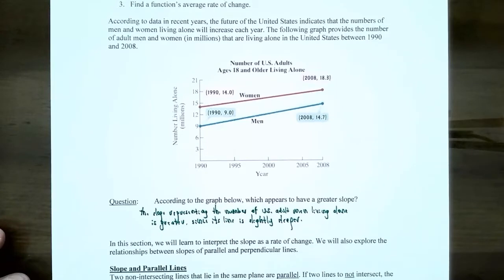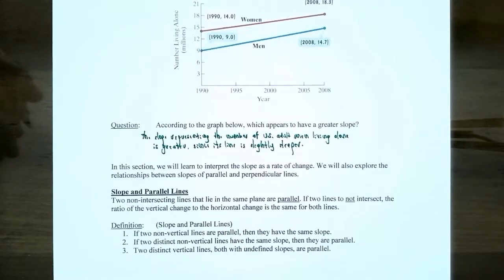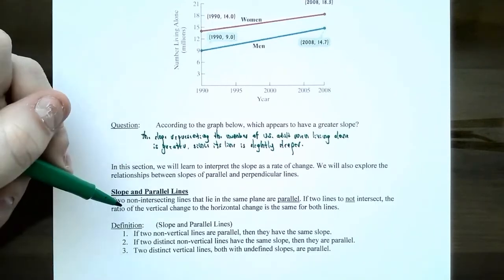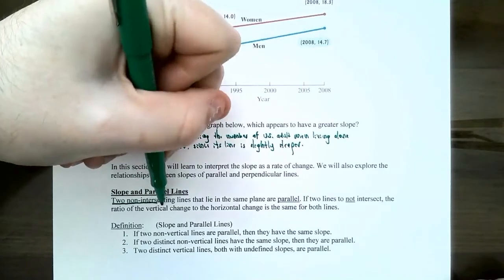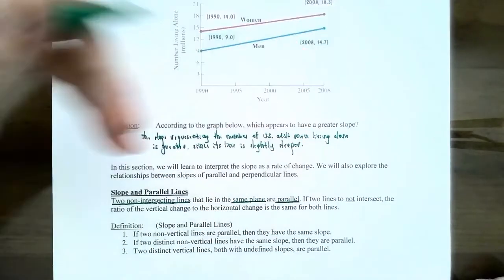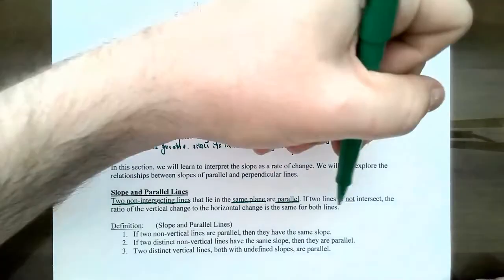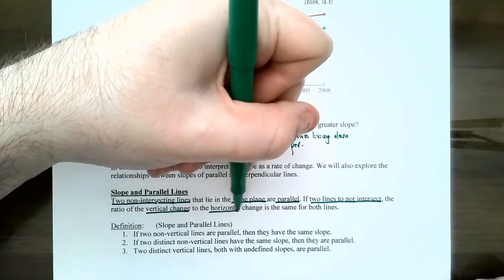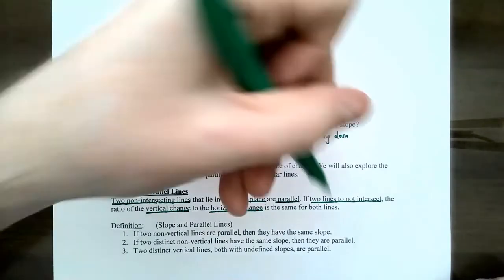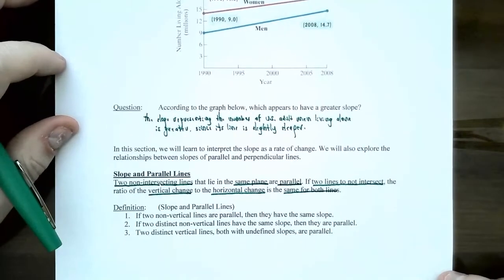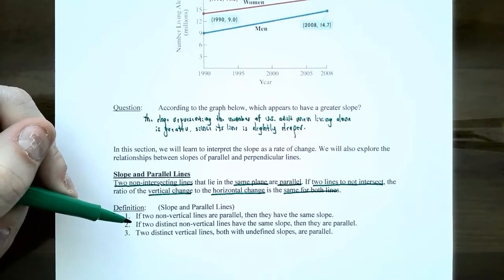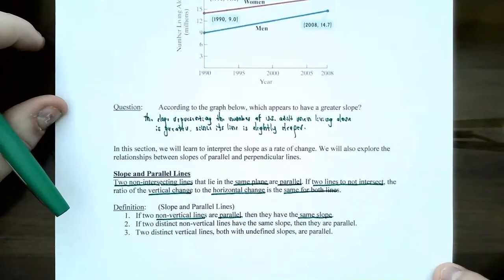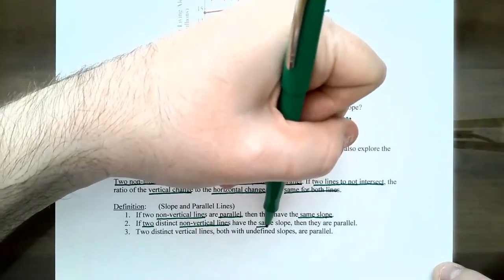We're going to save this application for the next video. For the rest of this video, we're going to focus on slope and how it compares with parallel and perpendicular lines. The definition of parallel lines is that you have two non-intersecting lines that lie in the same plane. Two lines that do not intersect must have the same ratio of vertical to horizontal change. If you have two non-vertical lines, they must be parallel if they have the same slope, or vice versa.